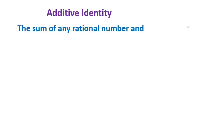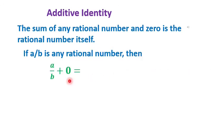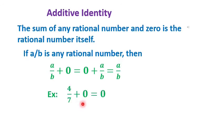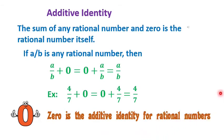Additive identity. The sum of any rational number and 0 is the rational number itself. If a/b is any rational number, then a/b plus 0 equals 0 plus a/b equals a/b. For example, 4/7 plus 0 equals 0 plus 4/7 equals 4/7. So 0 is the additive identity for rational numbers.